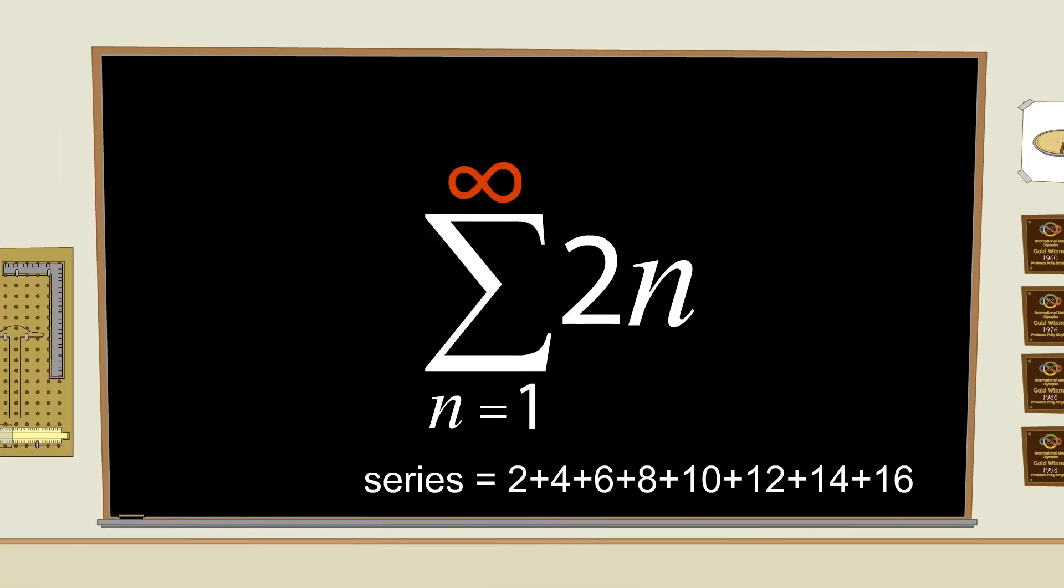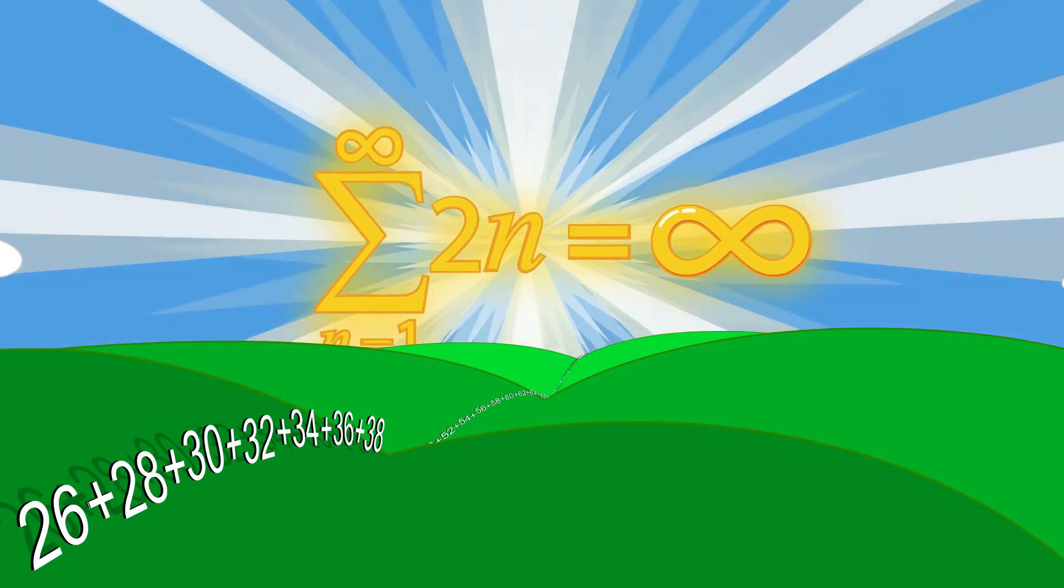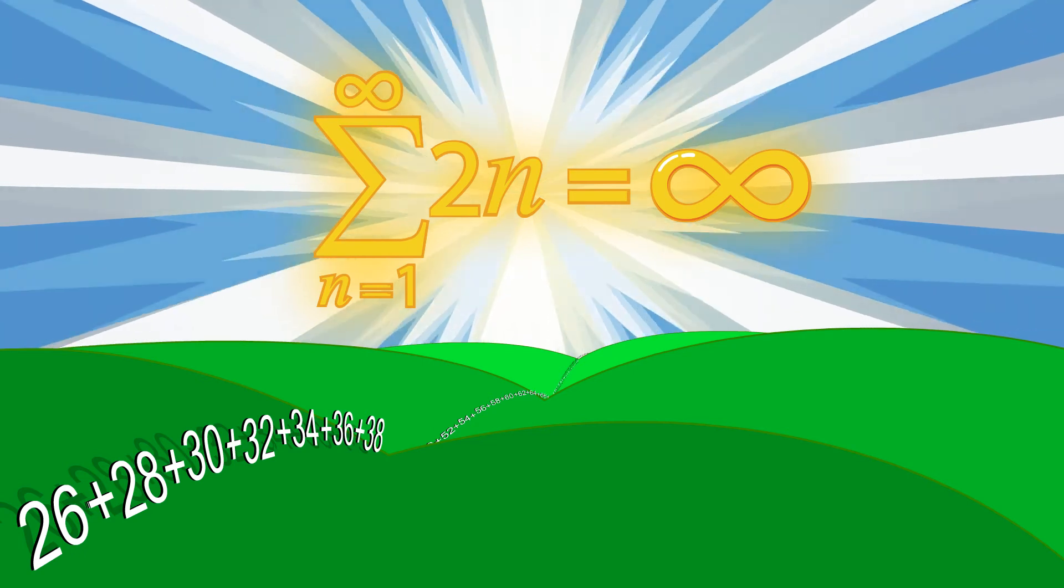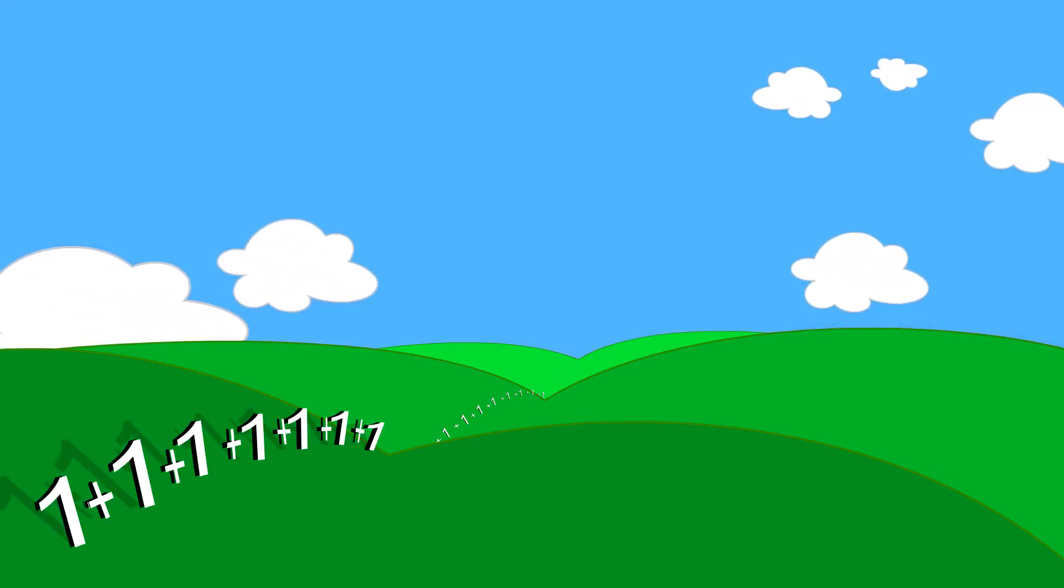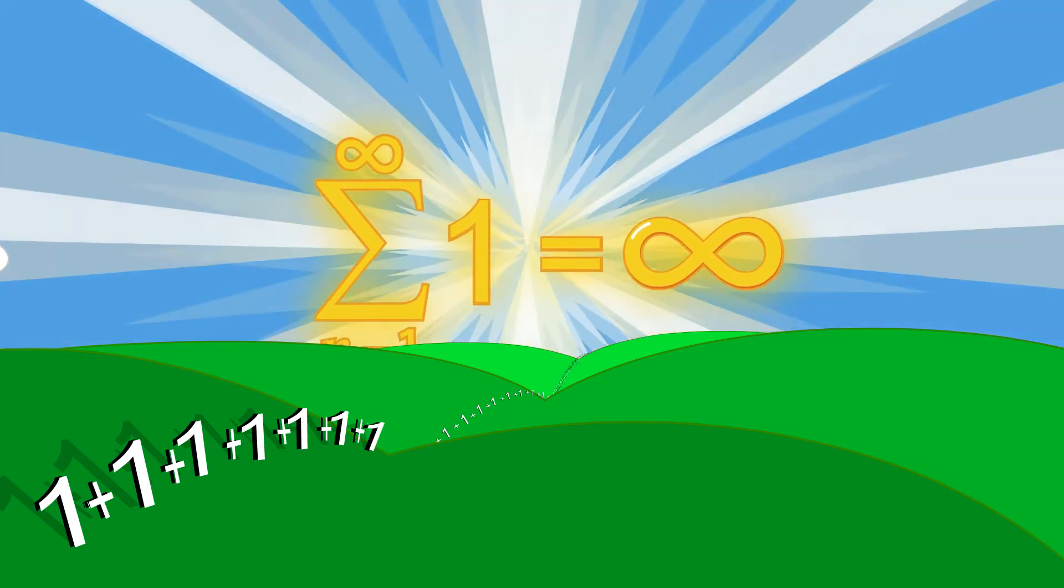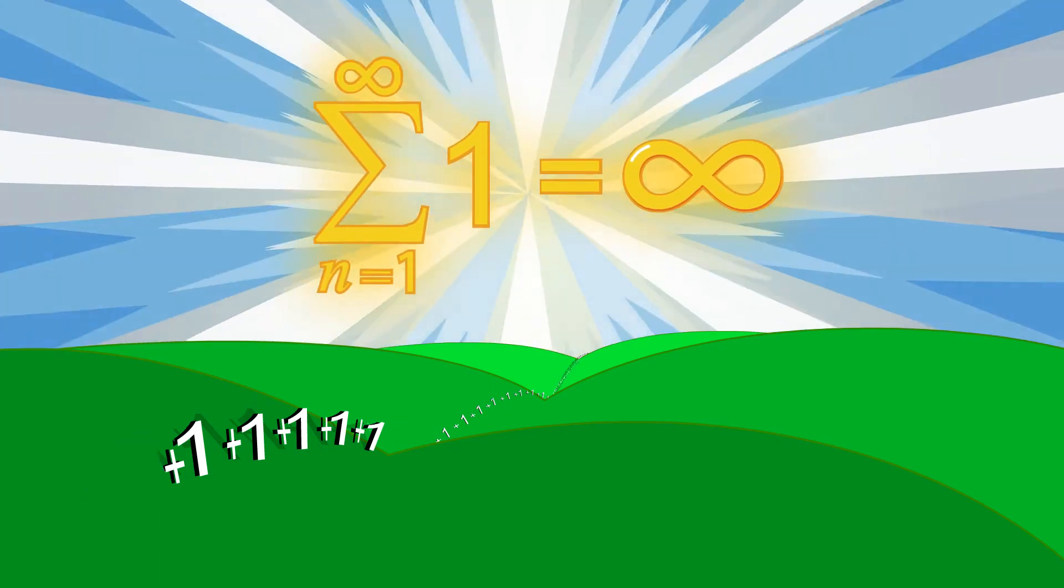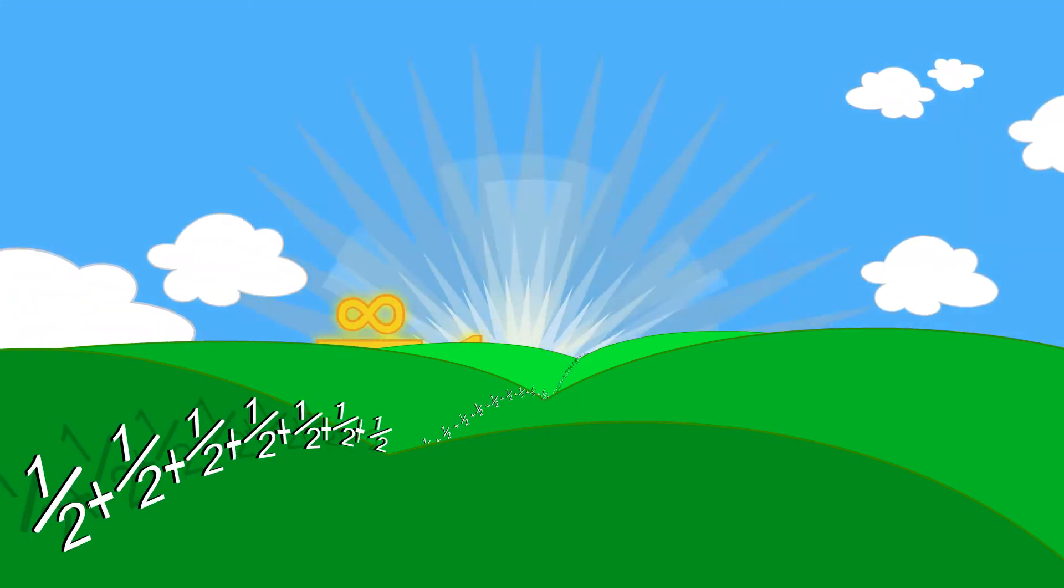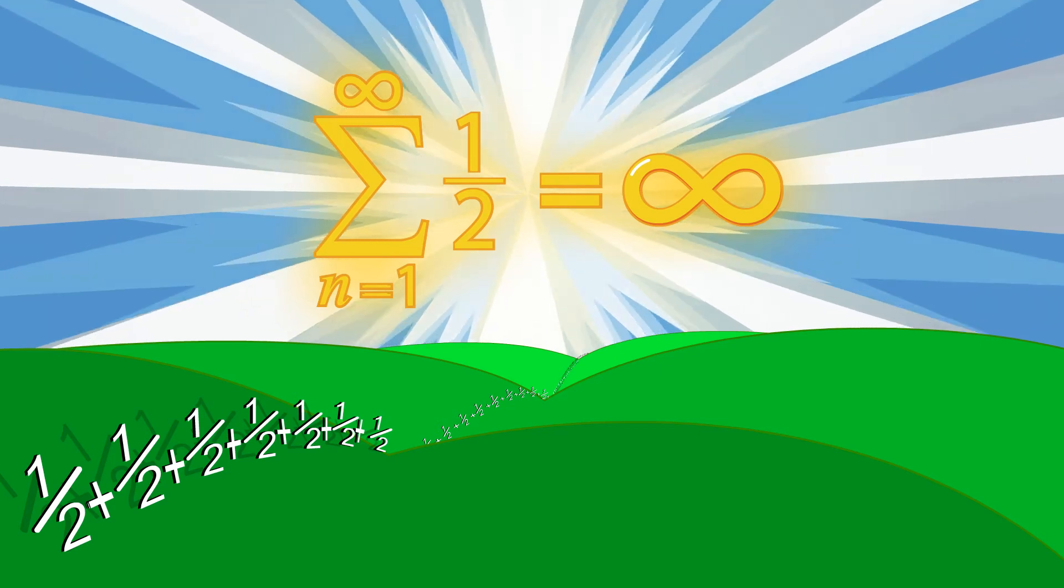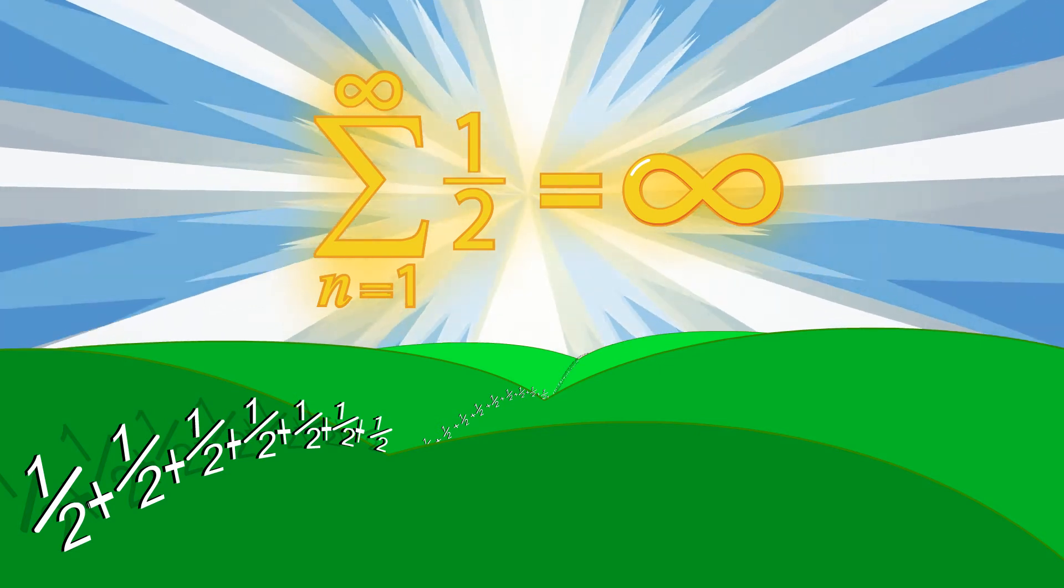Now we would keep adding terms forever. In this series, the terms get bigger and bigger, so the sum is obviously infinite. But even if the terms were all the same number, the sum would still be infinite. Take, for example, an infinite series where all the terms are the number 1, or 1 half. In fact, adding any number that's not 0 an infinite number of times gives you infinity.